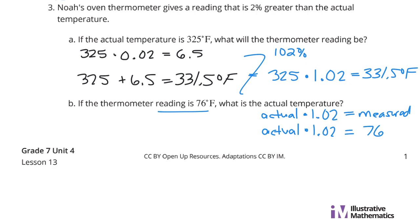And so, if I were to divide by 1.02 here, 76 divided by 1.02 will give us an actual temperature of about 74.5 degrees. And that is our solution, about 74.5 degrees Fahrenheit.